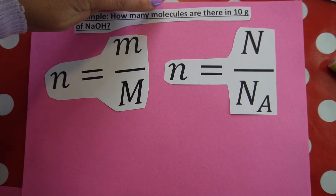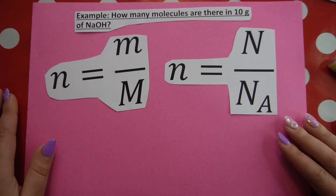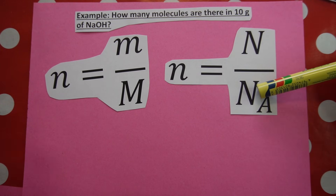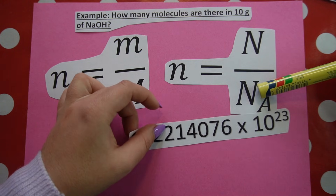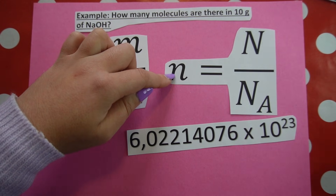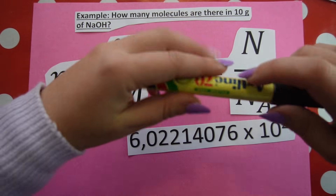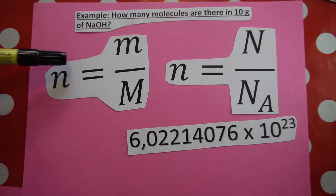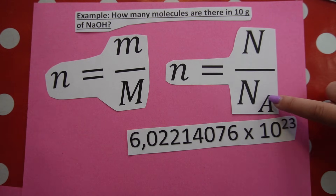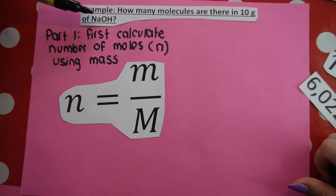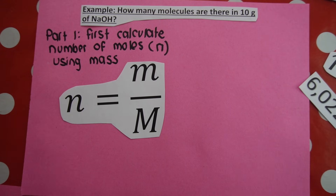That's exactly what our question is asking for. We are ultimately trying to find number of molecules. We know Avogadro's number — 6.02 times 10 to the 23 — but we don't know our number of moles yet, so we have two unknowns. We'll put the second formula on pause, first use the moles formula to calculate number of moles, then use that answer along with Avogadro's number to calculate number of molecules.